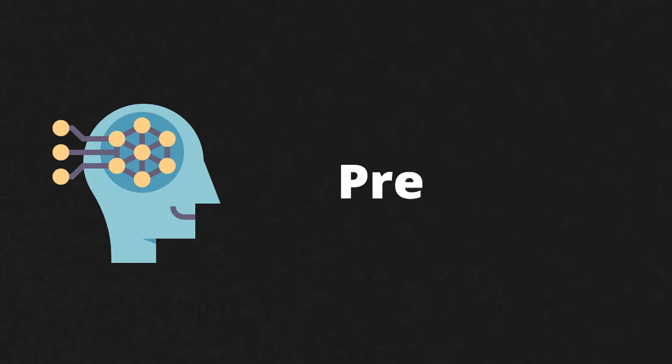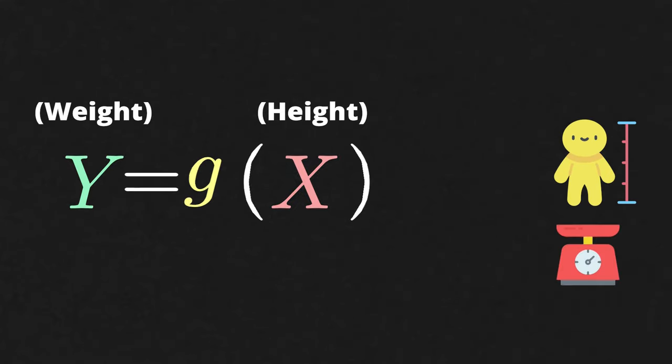An important task in machine learning is prediction. Given some information summarizing an independent variable x, for example the height of a person, predict the value of another dependent variable y, like their weight.